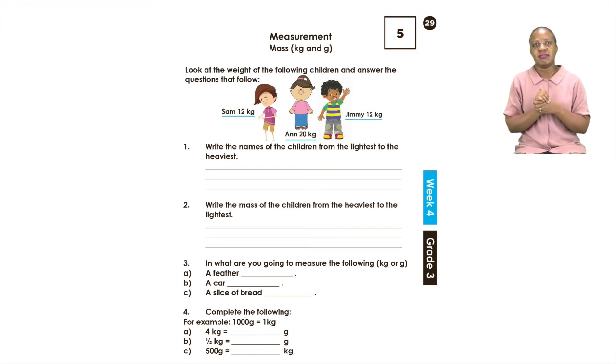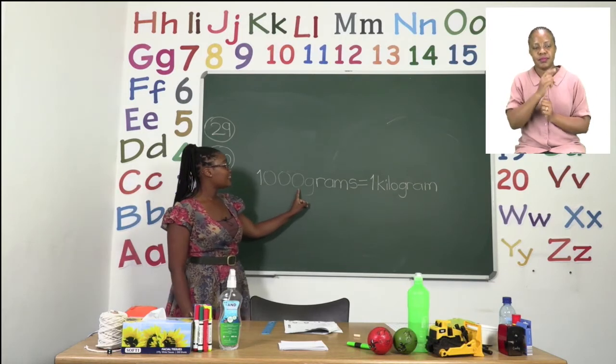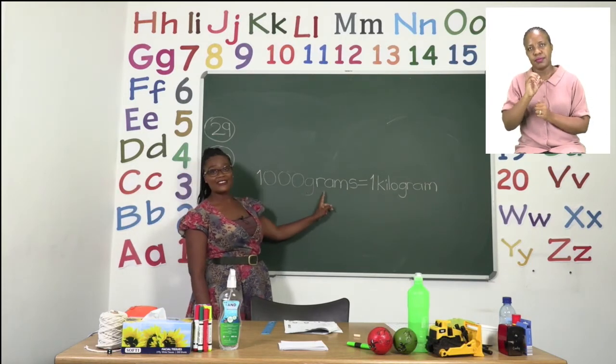Now before we continue we need to remember that one kilogram is equal to a thousand grams. That is going to be very important for you to remember what to do for number 4. So we have even written it on the board. We have said one kilo, one, a thousand grams.